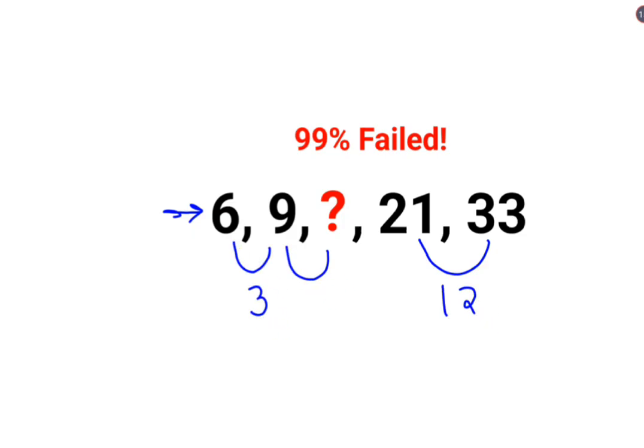So next difference should have been what? 6. And then after that, the next difference should have been 9. Right. So 9 plus 6 gets you 15. But 15 plus 9 doesn't get you 21. So probably this logic is not right.